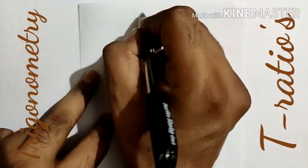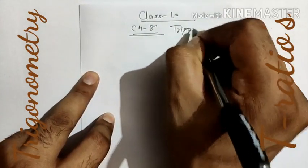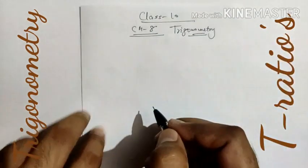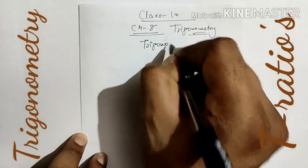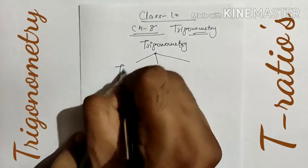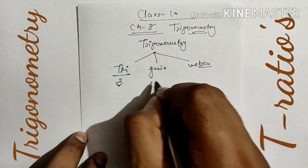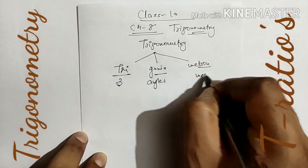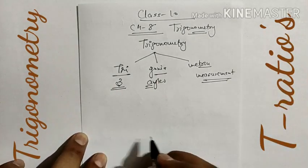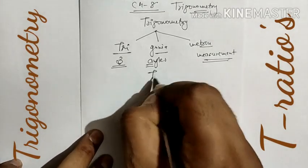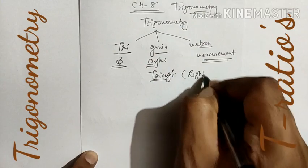Hello students, today we are going to discuss the Class 10th 8th chapter from the NCERT book — Trigonometry, an important topic for students taking Maths in 11th and 12th also. The word trigonometry is a group of three words: tri, meaning three; gonia, indicating angles; and matron, indicating measurement. In this chapter we discuss the shape which contains three angles — the triangle — and specifically the right triangle.